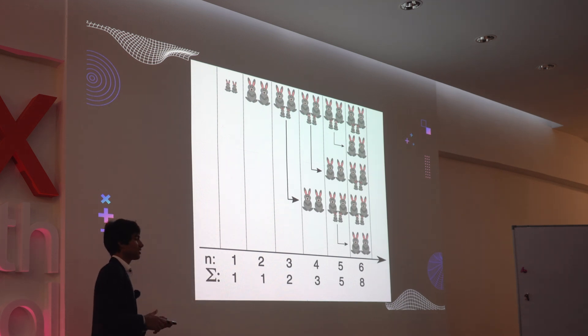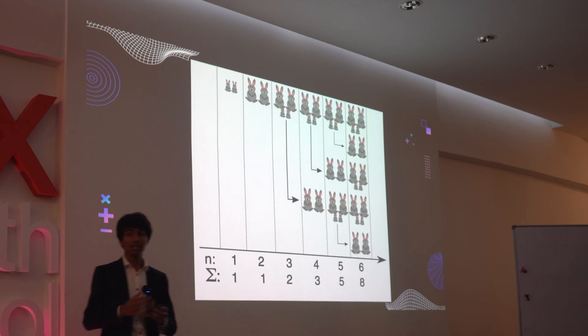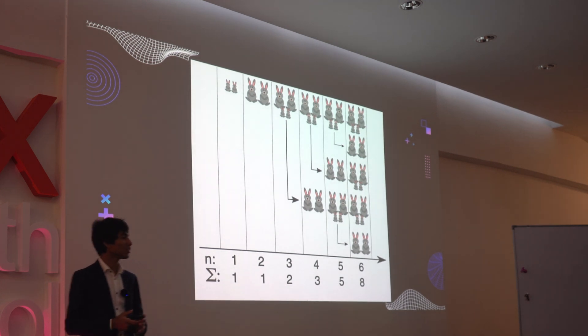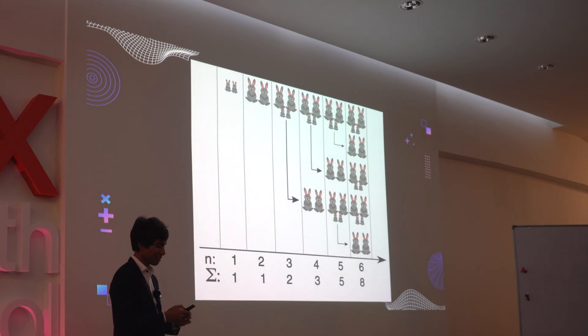But the really interesting thing here is that if we go on to an extra 12 months, and it reaches two years, the number would increase to over 46,000 pairs of rabbits.